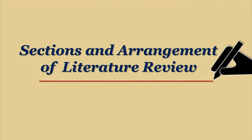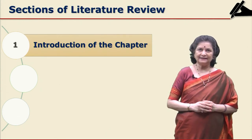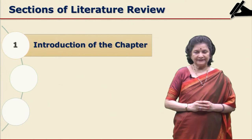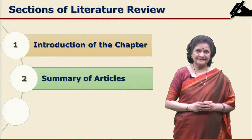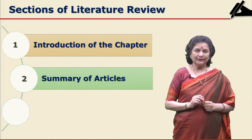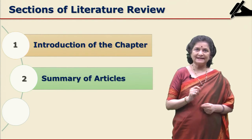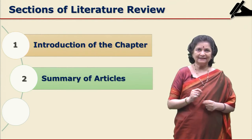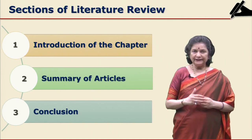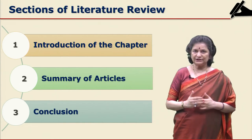Though there is no uniform practice of sectioning a literature review, the recommended sections for this chapter are: first, introduction of the chapter; second, critical summary of the articles — here you can compare, contrast, criticize, and show gaps in earlier research; and third, conclusion, which points out the findings of earlier research. This is the recommended order in a literature review chapter.